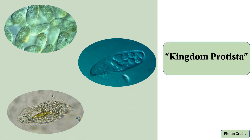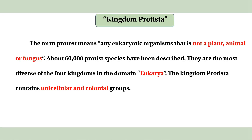What kind of protists are we going to talk about? Protists are the same as any eukaryotic organism that is not a plant, animal, or fungus. About 60,000 protist species have been identified. This is the most diverse of the four kingdoms in the domain Eukaryotes.